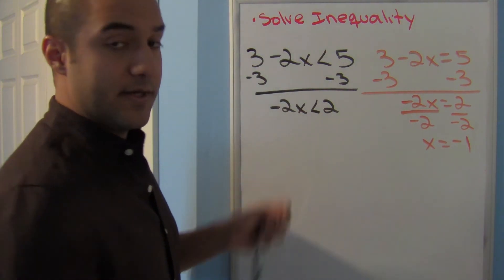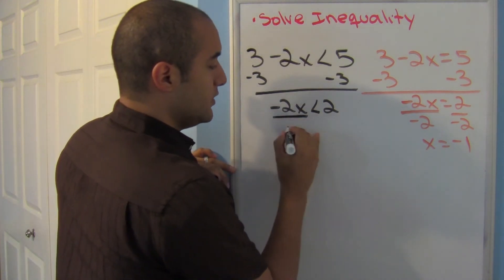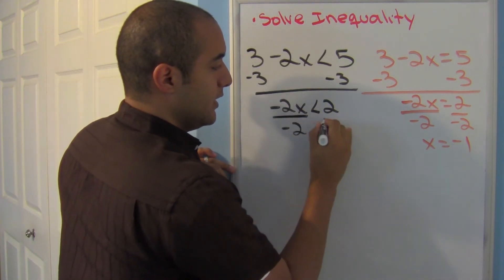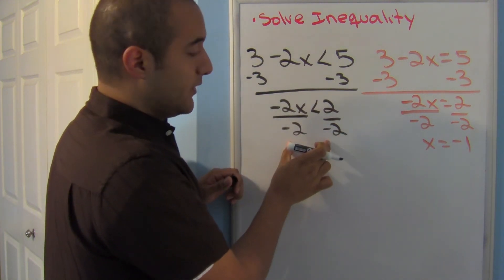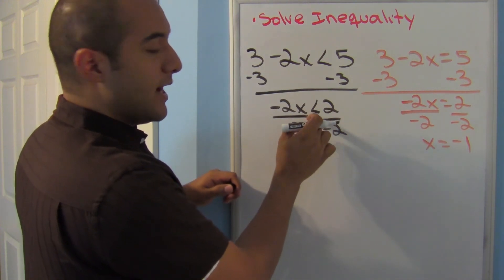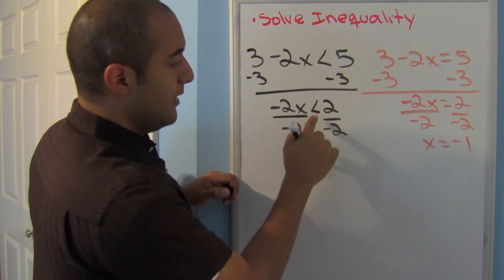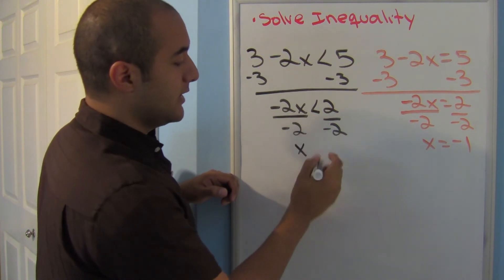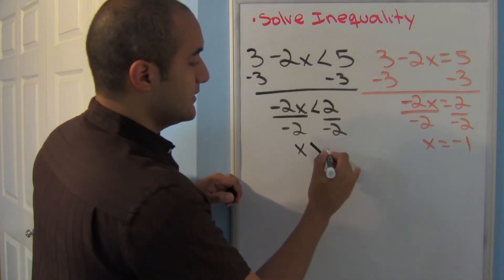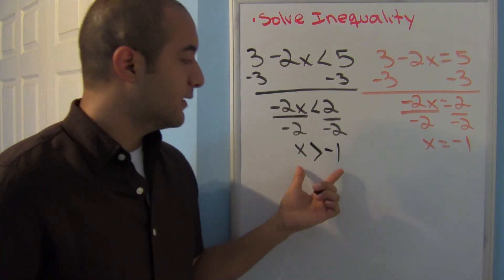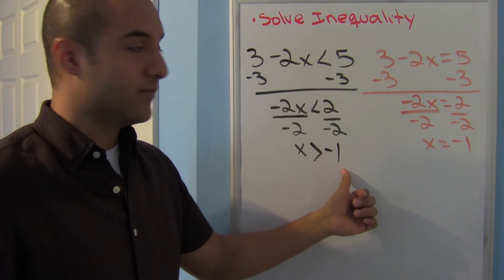Here I would divide negative 2 on both sides to get x by itself. So x equals negative 1. Here something special happens though. Here, whenever you divide or multiply both sides by a negative number, something special happens to that sign. First I'll bring down that x, but instead of a less than, this will become a greater than. Your sign gets flipped. This is your answer: x is greater than negative 1.